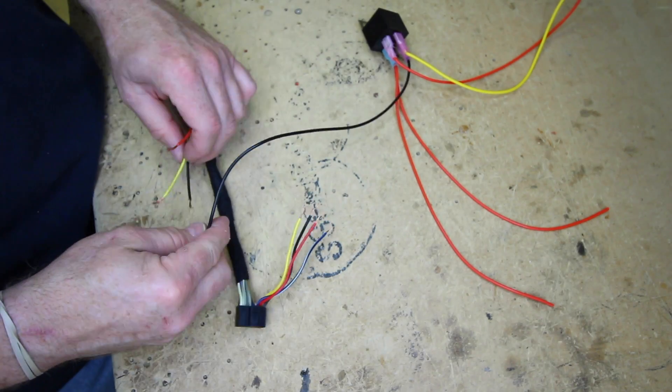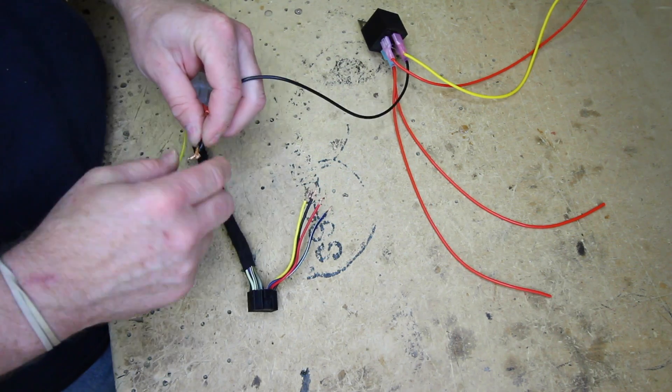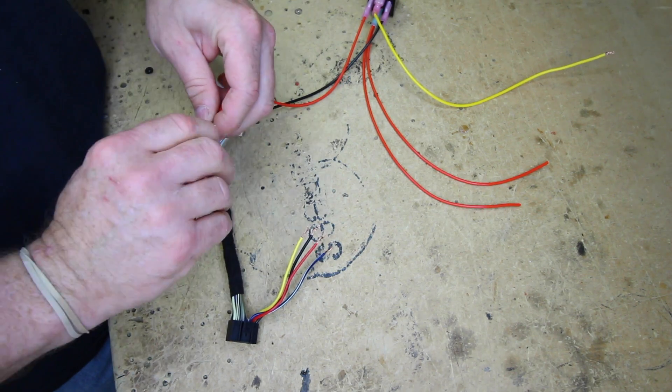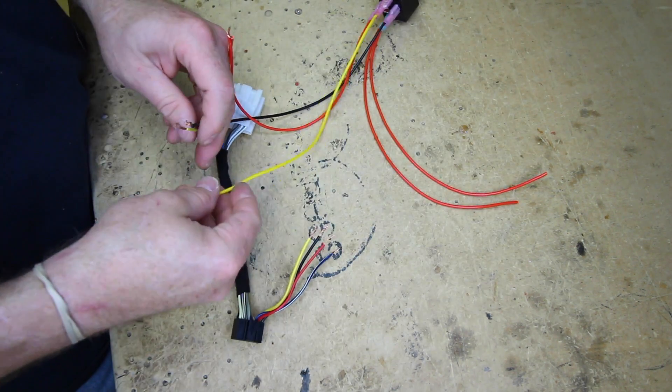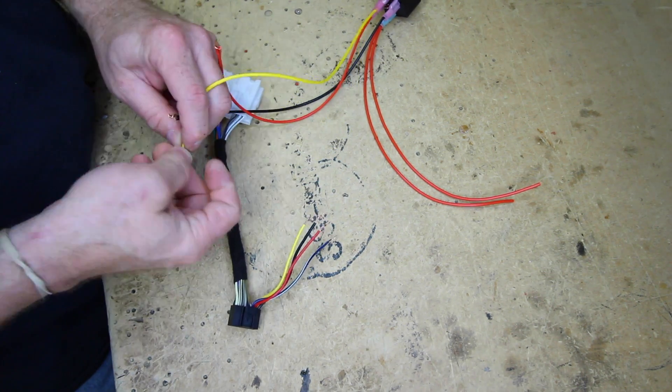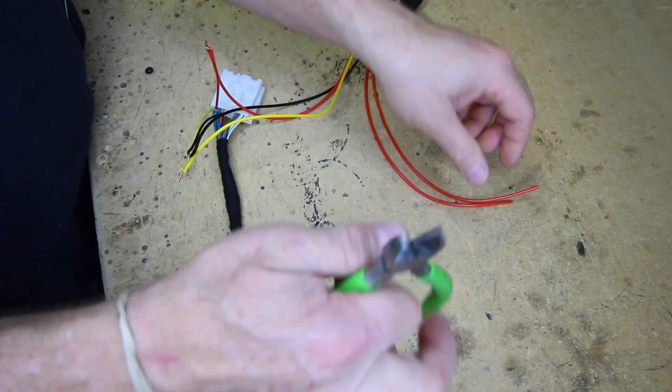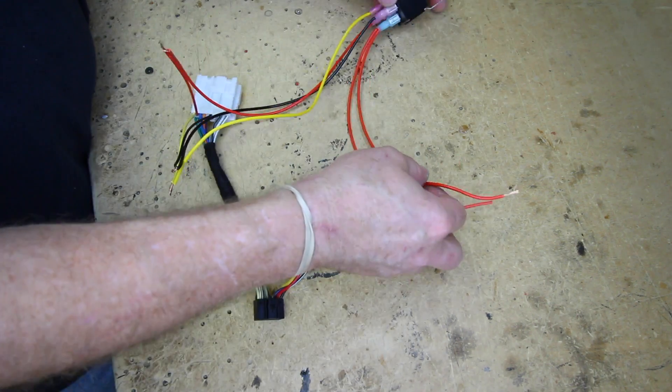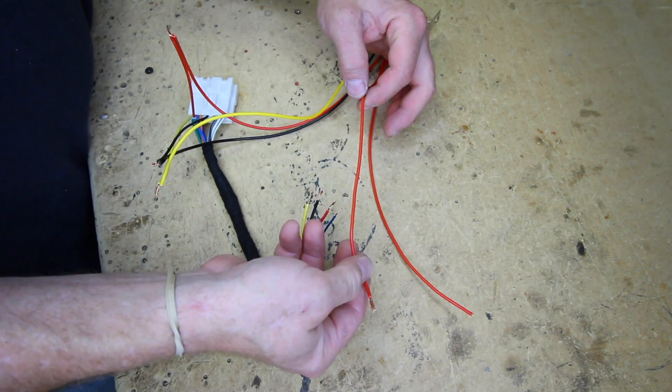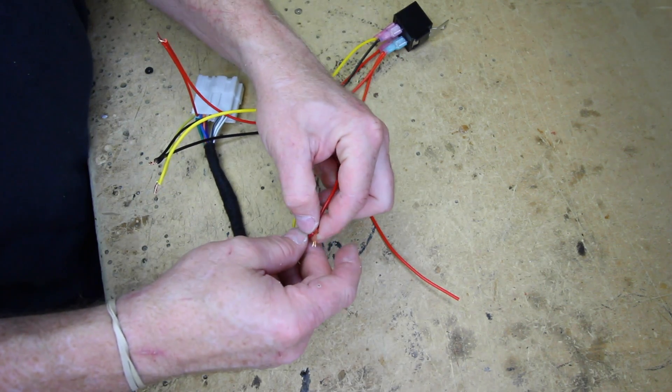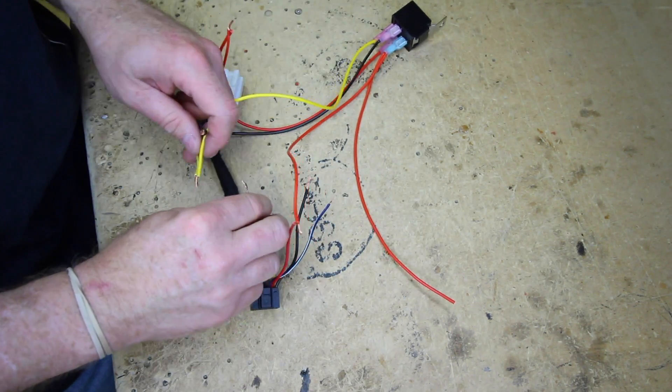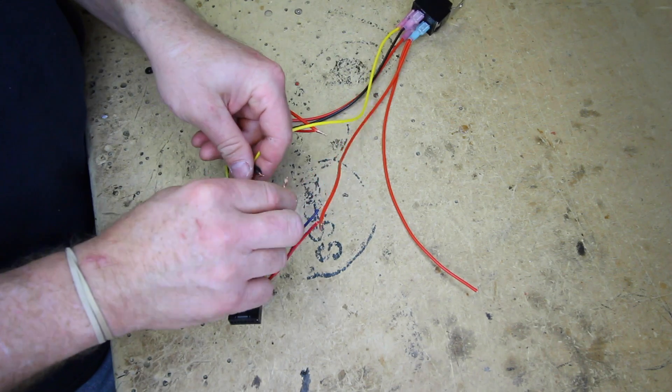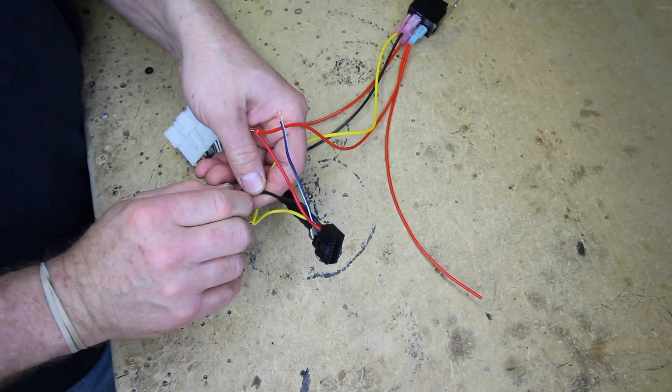So now what we want to do is bring this over to our harness, add the ground, add the accessory, add the 12 volts, and then we'll hook it up to 87. Now we have our two wires for accessory. One is going to be for powering up the backup camera. The other one is going to be for powering up the radio. So we'll go ahead and twist that on. And then we can join these two together. So we'll twist our yellows and we'll join our blacks.